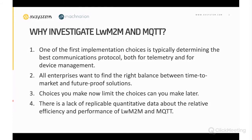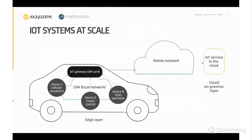Now I hand it over to Marcin. Thanks Sam, for this introduction. Now let's take a step back for a moment. Connected cars is a simple example of a complex IoT system. Every car has a number of IoT devices inside it — like a unit controlling collision avoidance, cruise control, tire operation, and so on. They talk over a local network with a central component that plays the role of an IoT gateway. And this gateway uses a mobile network to talk with the IoT service located in the cloud. It's also important to understand that the gateway can execute some custom logic as well.